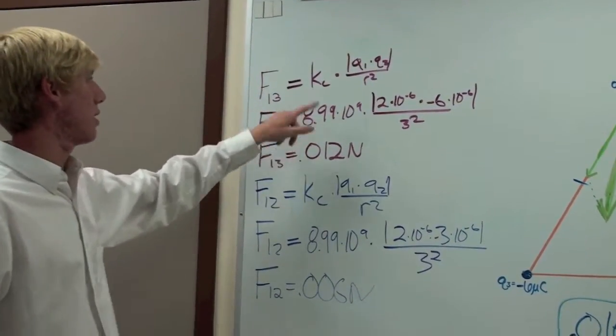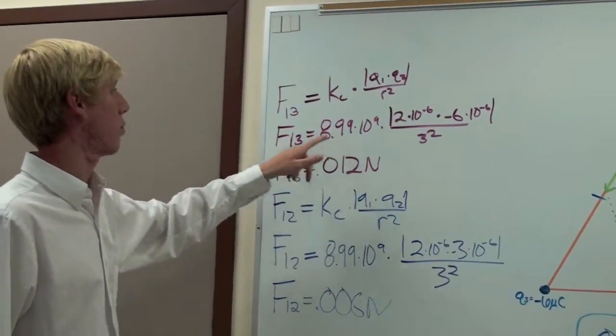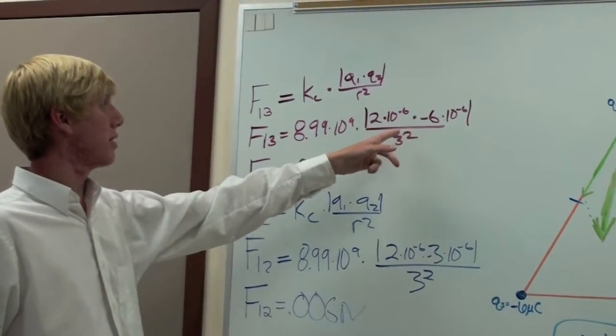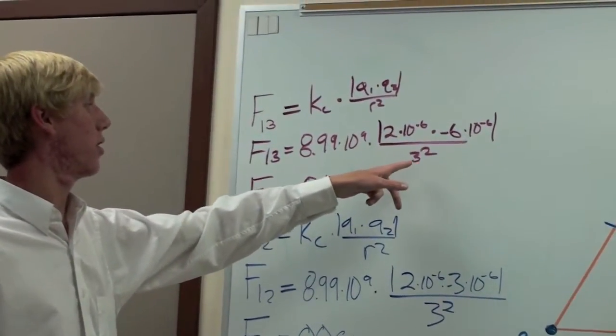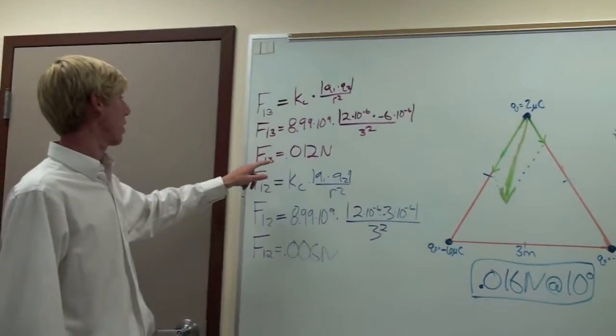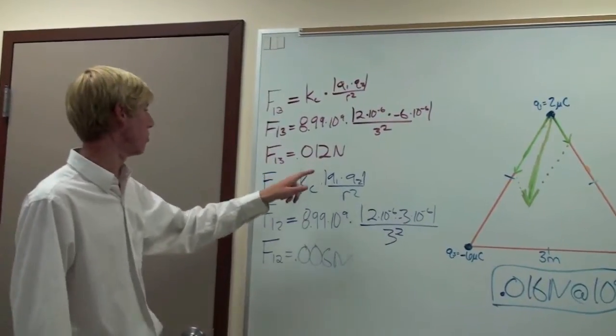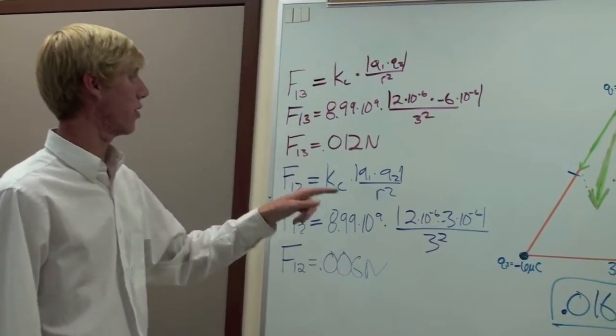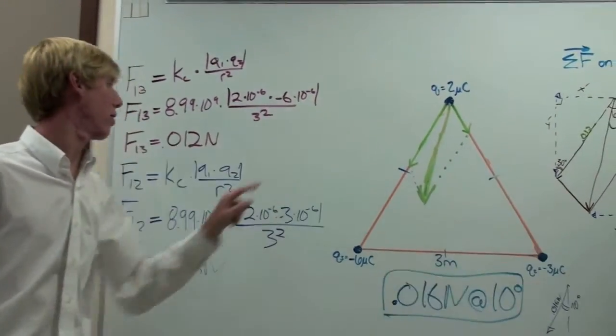So Kc is the constant, which is 8.99 times 10 to the ninth times these numbers over 3 squared because that's your length. It gives you 0.012 newtons and that's for 3 on 1 right here.